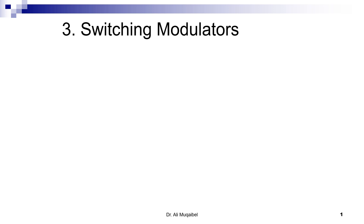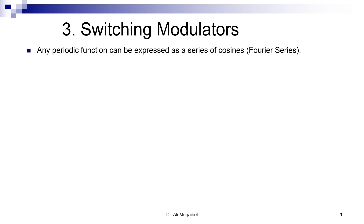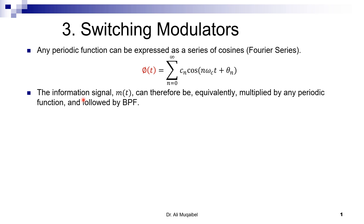The third type of modulator is called the switching modulator. It's a fantastic idea: any periodic function can be expressed as a series of cosines — a Fourier series. Recall that inside the Fourier series we have the cosine of multiple frequencies. So instead of multiplying the message by a cosine, we can multiply by any periodic function and then use a band-pass filter to pick the frequency of interest.